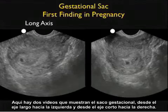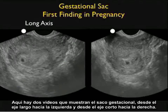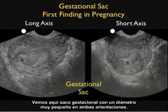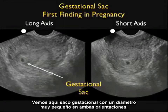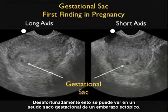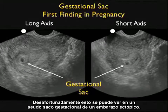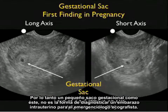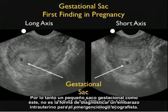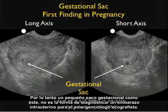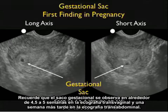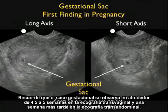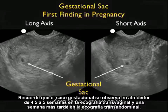Here are two video clips showing the gestational sac — long axis to the left and short axis to the right. We see a very small diameter gestational sac in both orientations. A small gestational sac like this can be seen with a pseudo-gestational sac of ectopic pregnancy and is in no way diagnostic of an intrauterine pregnancy for the emergency physician sonographer. Remember, the gestational sac is seen at about 4.5 to 5 weeks on transvaginal sonography and about a week later on transabdominal sonography.